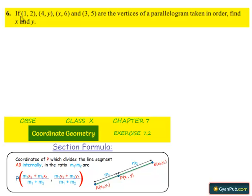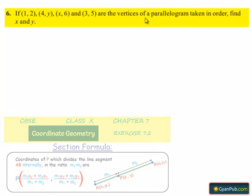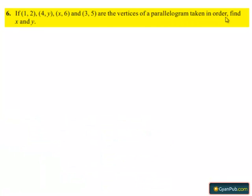Coming to the question number 6. If (1, 2), (4, y), (x, 6) and (3, 5) are the vertices of a parallelogram taken in order, find x and y.